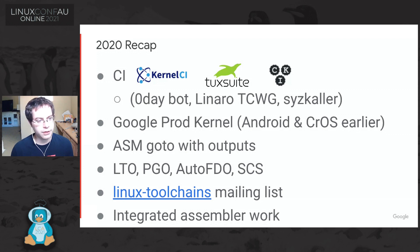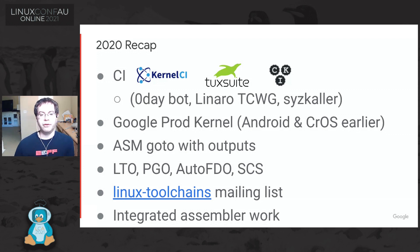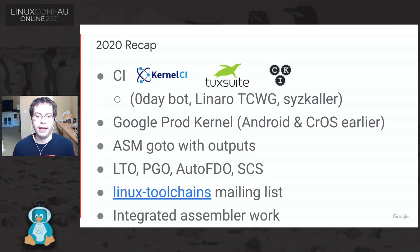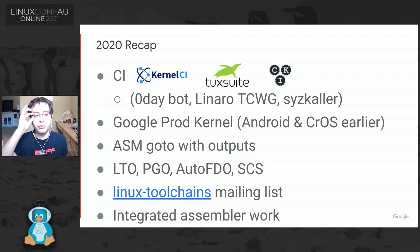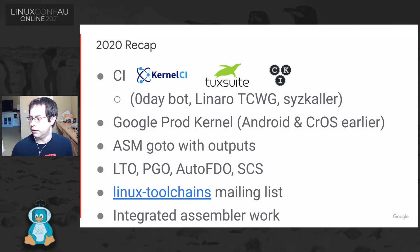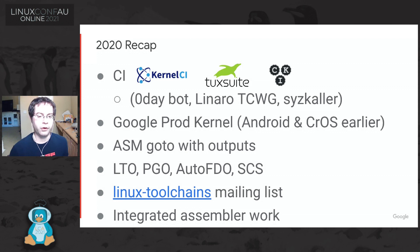Previously, before 2020, Android and Chrome OS had both moved their Linux kernel builds to being built with Clang. And finally in 2020, we were actually able to move all of Google's production servers in our fleet over to having their kernel builds built with Clang as well. A ton of work from a lot of people went into that.